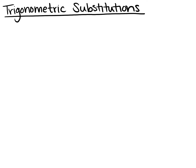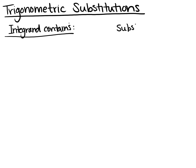So you saw when you read through the book — let's just put down our table and then we'll do examples. So our table: if the integrand, which is the stuff inside the integral, contains a certain type of algebraic expression, here's the substitution we're going to make. I'm going to give you those first two columns from your book on the test, but you need to know how to apply them.